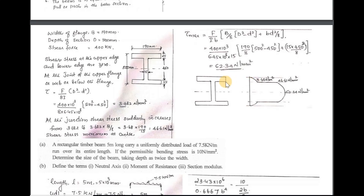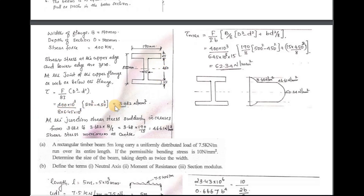The shear stress at the inner point of the flange is: τ = F / (8I) × (D² − d²). Substituting values — F = 400 × 10³ N, I = 6.45 × 10⁸ mm⁴, D = 500 mm (total depth), d = 500 − 25 − 25 = 450 mm — gives a shear stress of 3.682 N/mm².